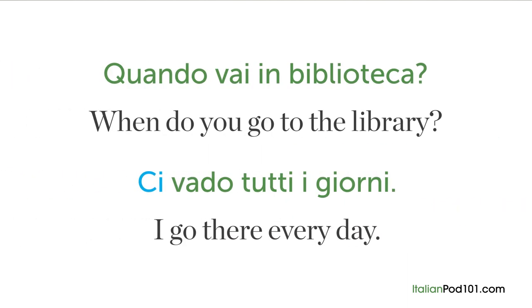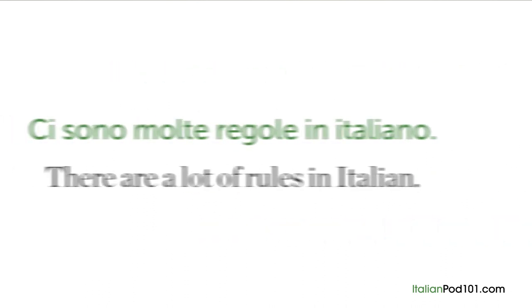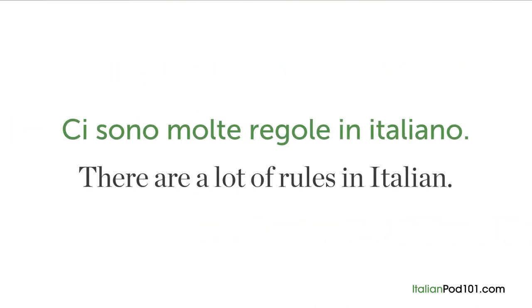CI can also be an adverb of place, meaning 'there.' If someone asks 'Quando vai in biblioteca?' — when do you go to the library? — you could answer 'ci vado tutti i giorni,' meaning 'I go there every day.' Another example: 'ci sono molte regole in italiano' — there are a lot of rules in Italian.